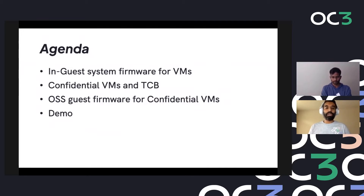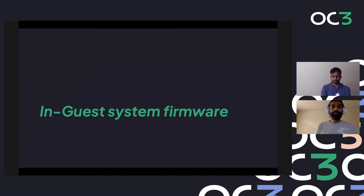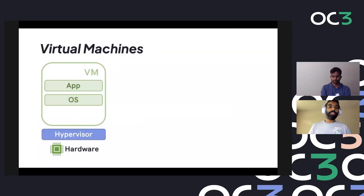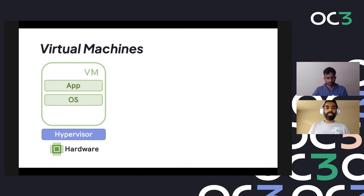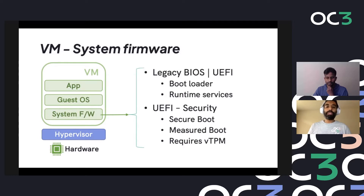We have a demo at the end to showcase what we have done. Typically when we think of VMs, we think of just an application running on top of an OS in a VM on top of a hypervisor which abstracts or virtualizes the hardware. But if you drill down deeper, especially for scenarios where you're deploying VMs, you realize there are a lot more components in the mix - and one of them is system firmware, which could be legacy BIOS or UEFI. The main purpose of system firmware is to act as a bootloader for the operating system in the guest, as well as provide potentially some runtime services.